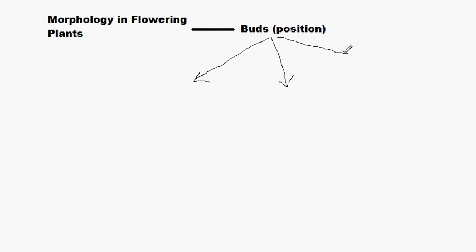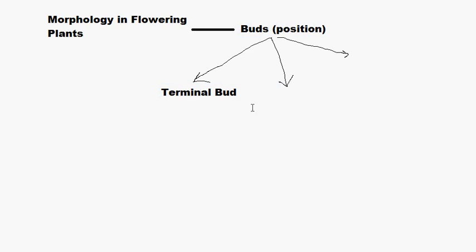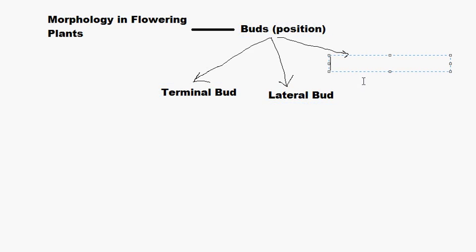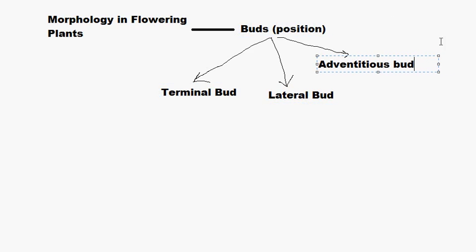What are those three categories? Let's list them one by one. The first one is the terminal bud. The second one is the lateral bud. The third one is the adventitious bud. Those were the three classifications we can make based on position. Let us study each one by one.